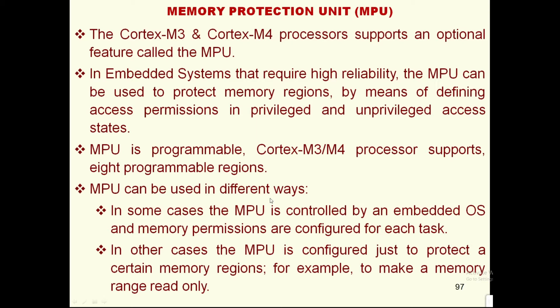Cortex-M3 and M4 processors support 8 programmable regions. The memory protection unit can be used in different ways. In some cases, the memory protection unit is controlled by an embedded OS and memory permissions are configured for each task. In other cases, the memory protection unit is configured just to protect certain memory regions, for example, to make a memory range read-only.